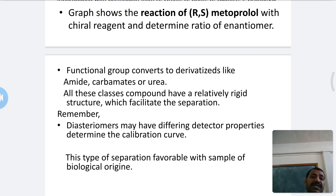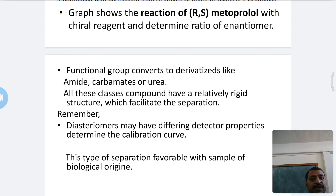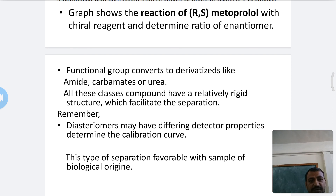The detector properties of diastereomers should be compared with the starting enantiomeric properties. This type of indirect separation is favorable for samples of biological origin, and these indirect separation methods are well suited for biological origin sample separation.